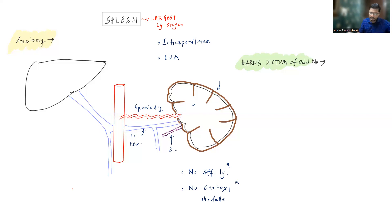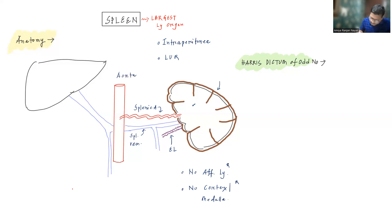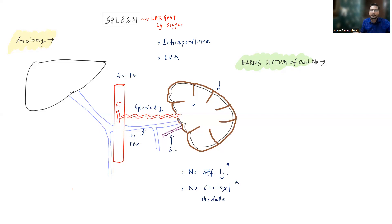At the hilum, you can find the splenic artery going into the splenic parenchyma, and the splenic vein coming out. There are also efferent lymphatics. The splenic artery is a branch of the celiac trunk.